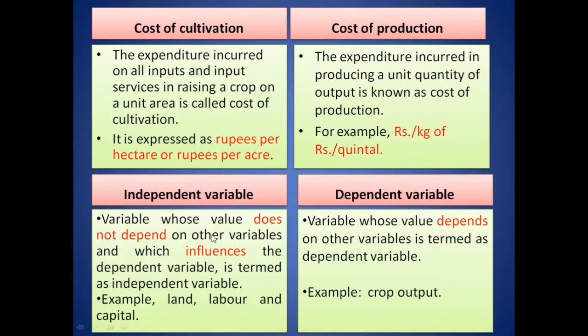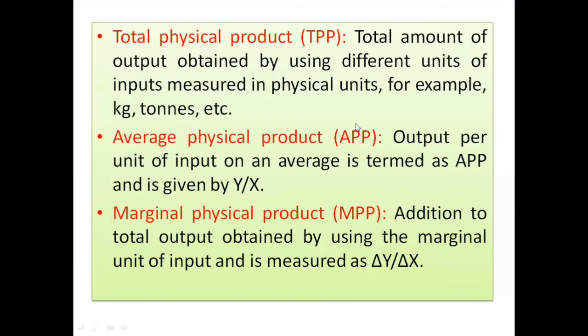An independent variable is one whose value does not depend on any other variable; it influences the dependent variable. Land, labor, and capital are independent variables — if you do nothing to the land, the land remains as it is. A dependent variable is one whose value depends on other variables — crop output depends on land, labor, and capital. So crop output is the dependent variable.